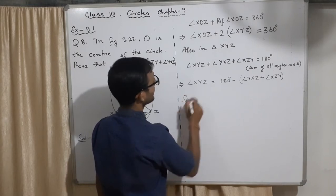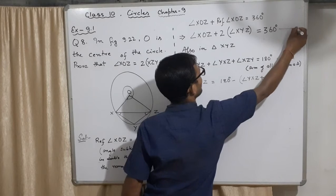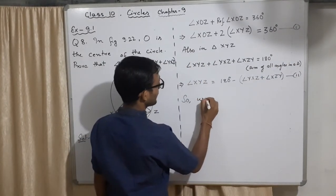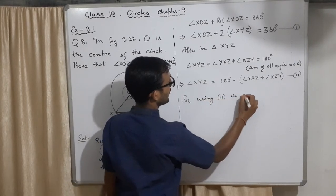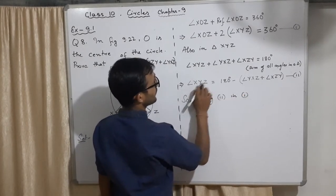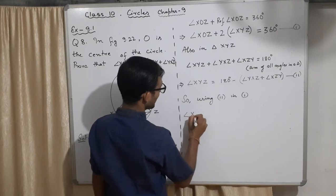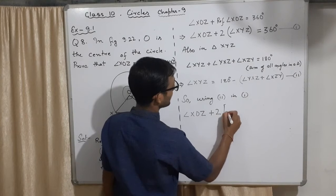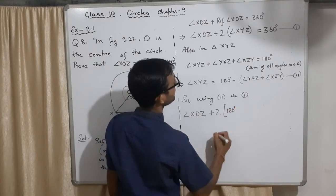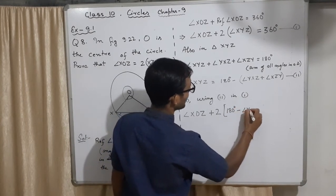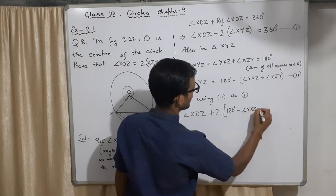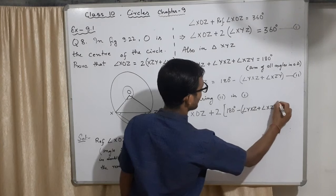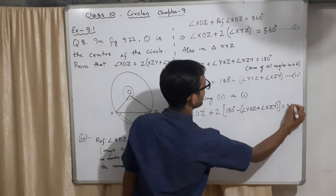What you can do is you can make it equation one also if you want. Using equation two in one, we are using this equation here. ∠XYZ plus 2 times (180 degrees minus ∠YXZ plus ∠XZY) equal to 360 degrees.